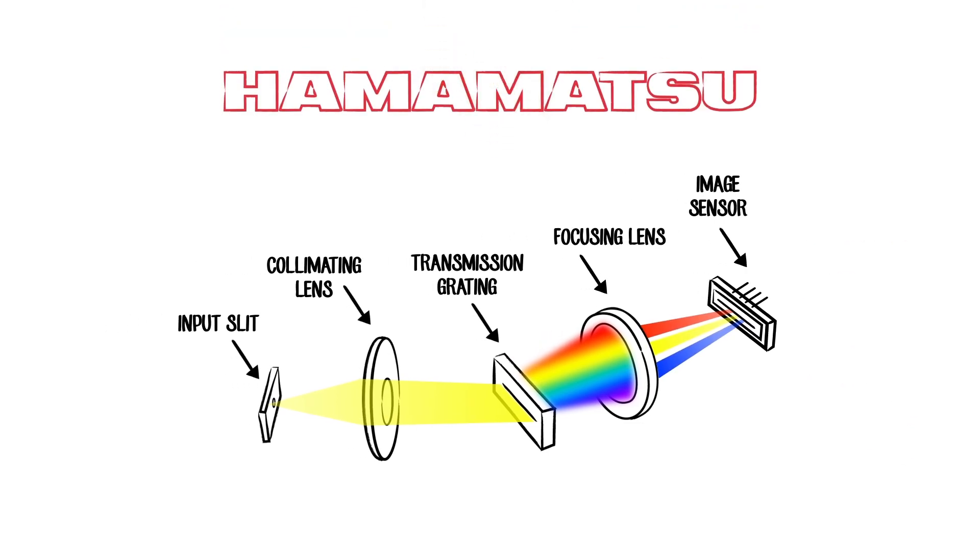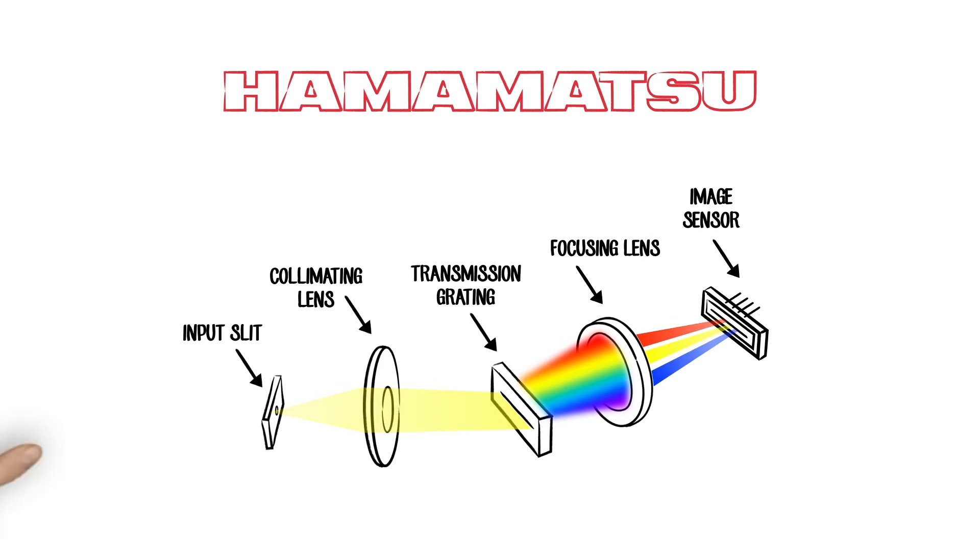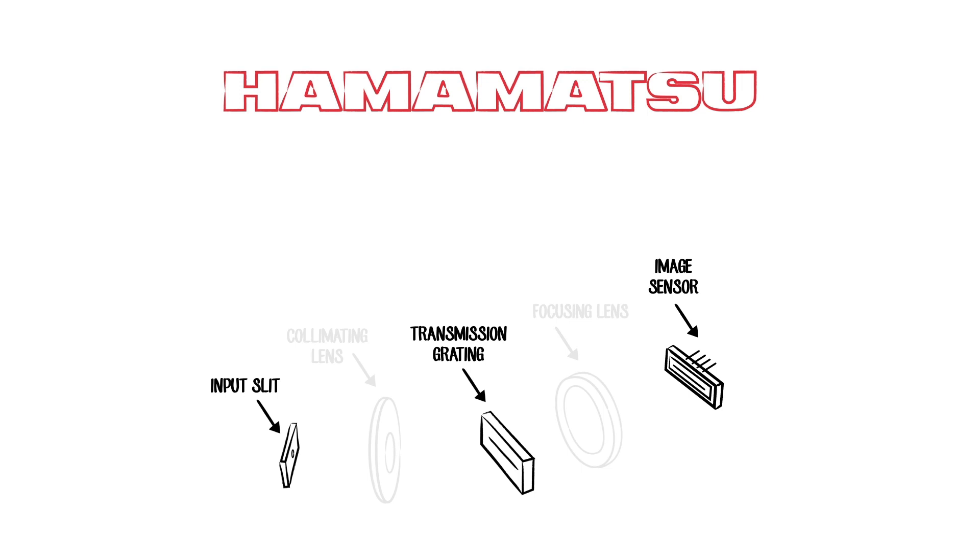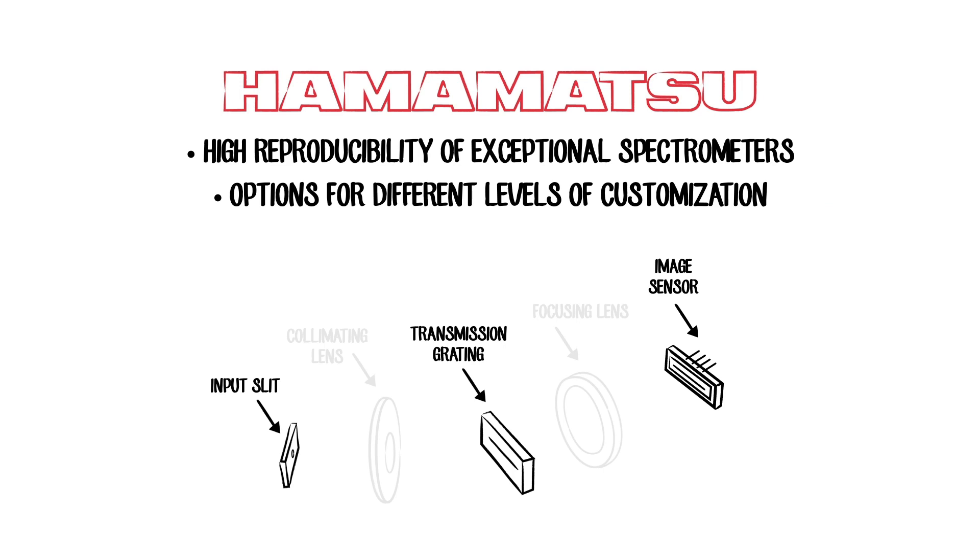Many of the components that go into the spectrometer from Hamamatsu are manufactured originally by Hamamatsu. This vertical integration means we have high reproducibility of exceptional spectrometers and offer the option for different levels of customization.